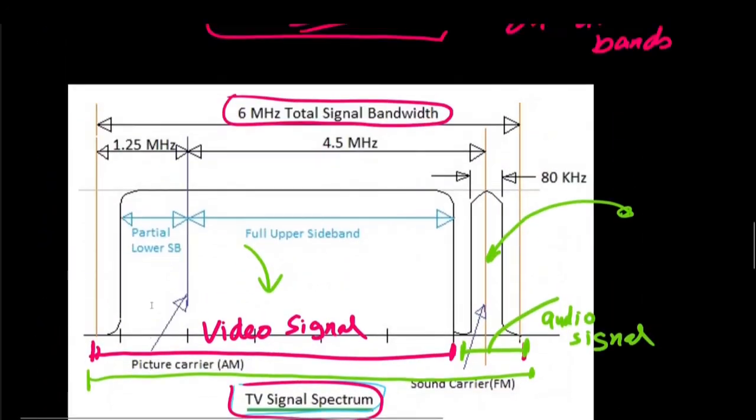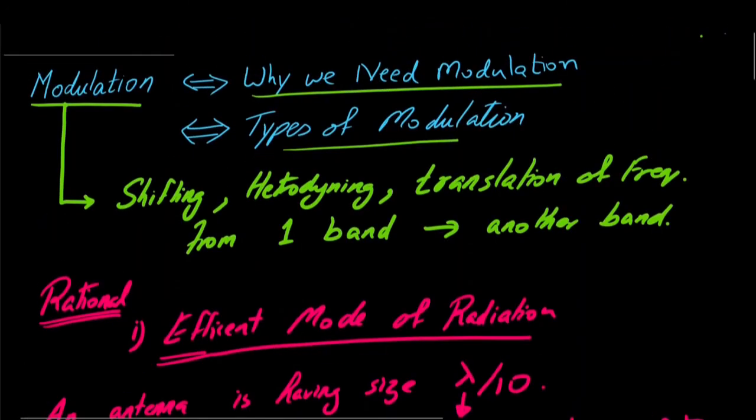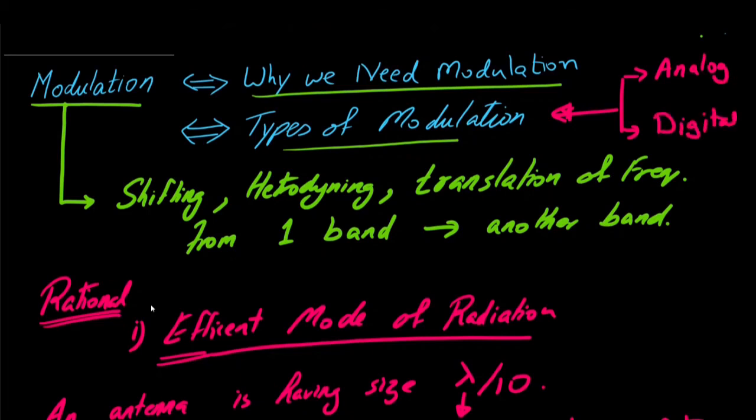With the rationale addressed in this part, let us move towards the types of modulation. Basically we have two main types: the first one is analog modulation, and then we have digital modulation. Roughly speaking, the digital modulation, you would see in chapter 6 that they link with shift keying. Presently we are interested in analog modulation schemes, which are AM, FM, and PM.